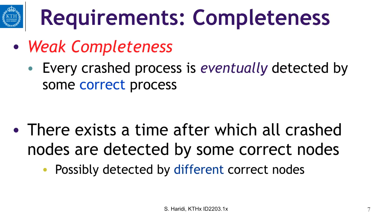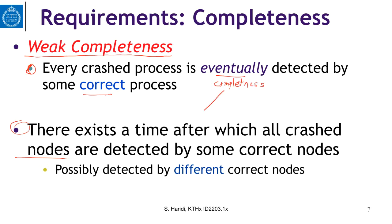Another variant is weak completeness, which says that every crashed process is eventually detected by some correct process. If a process crashes, some of the alive processes will detect it. There exists a time after which all crashed processes are detected by some correct nodes. To summarize: strong completeness requires every crashed process to be detected by all processes, while weak completeness requires each crashed process to be detected by at least some correct process.